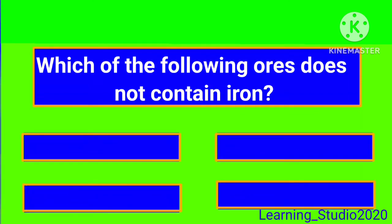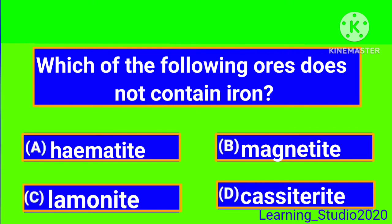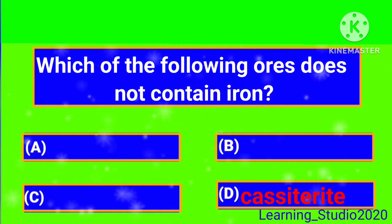Which of the following ores does not contain iron? It's Cassiterite.